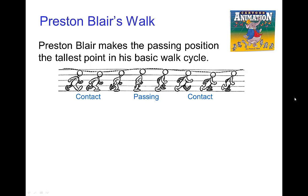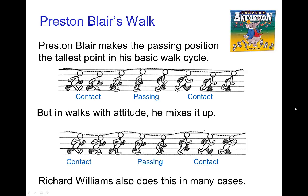For Preston Blair, his basic walk looks more like what we saw in the video, with the highest position of the body around the passing position and the lowest at contact. But he also varies that with different walks, so that sometimes the highest point is just before or just after the passing position, as with Richard Williams.